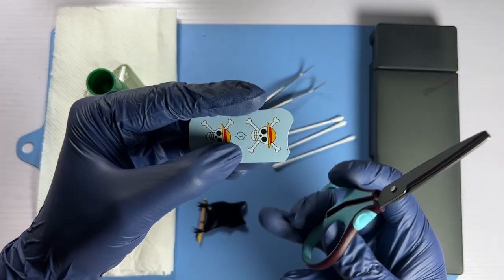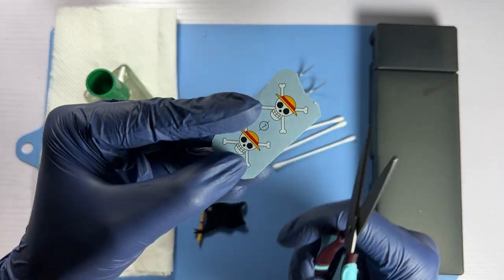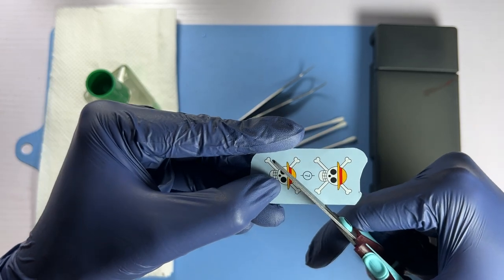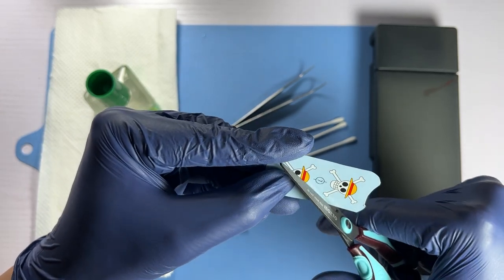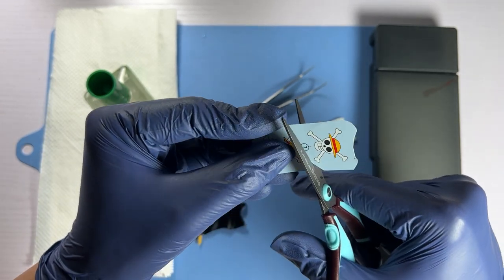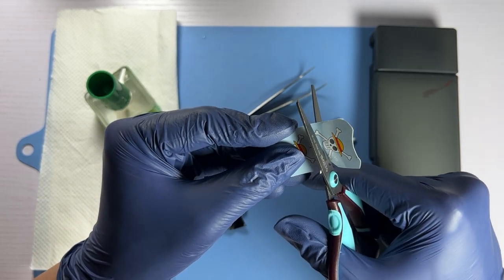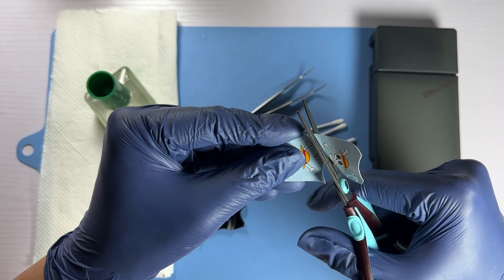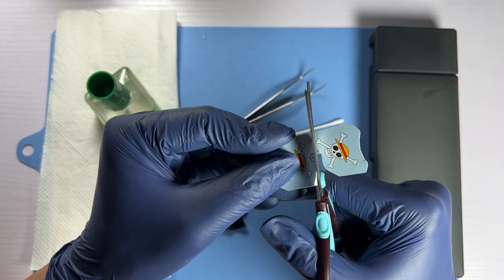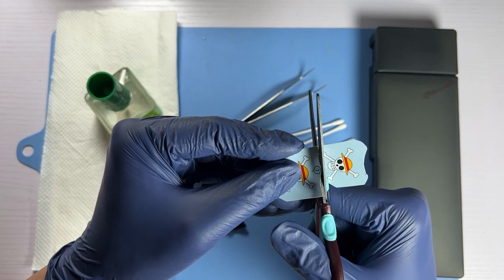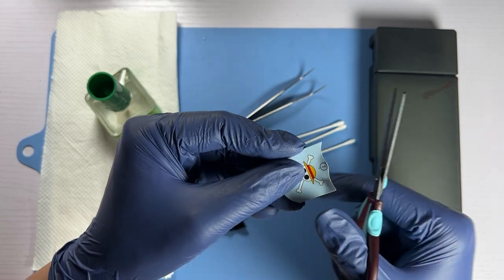We'll begin by first cutting the water decal out from the decal sheet as close to the outlines of the straw hat pirate symbol decal as I possibly can. Be sure to do this in a well-lighted work area lest you cut into the decal itself and ruin things before you even begin.